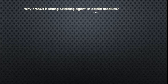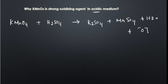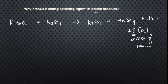When KMnO4 is treated with an acidic medium — H2SO4 — it gets converted into K2SO4 (potassium sulfate) plus MnSO4 (manganese sulfate), plus water, and most importantly it gives 5 nascent oxygen. This nascent oxygen is responsible for the oxidizing nature of KMnO4 in acid medium.